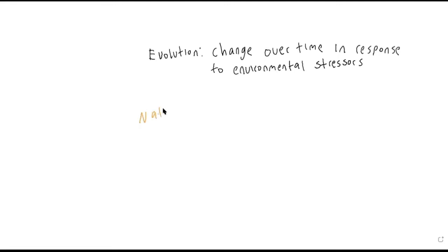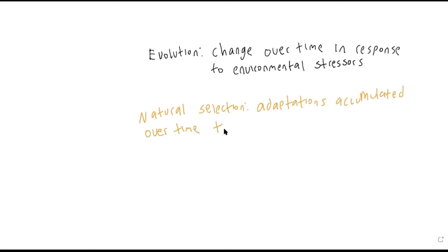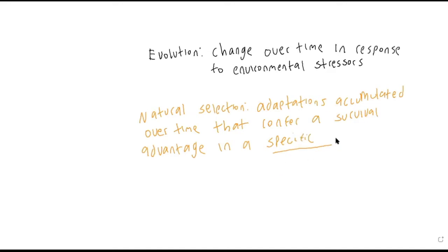That brings in the idea of natural selection. Natural selection is adaptations accumulated over time that confer a survival advantage in a specific environment. The key word is 'specific.' The environment chooses what survives — it is environment-specific. An organism that survives well in the Arctic probably wouldn't have such a great advantage in a forested region.